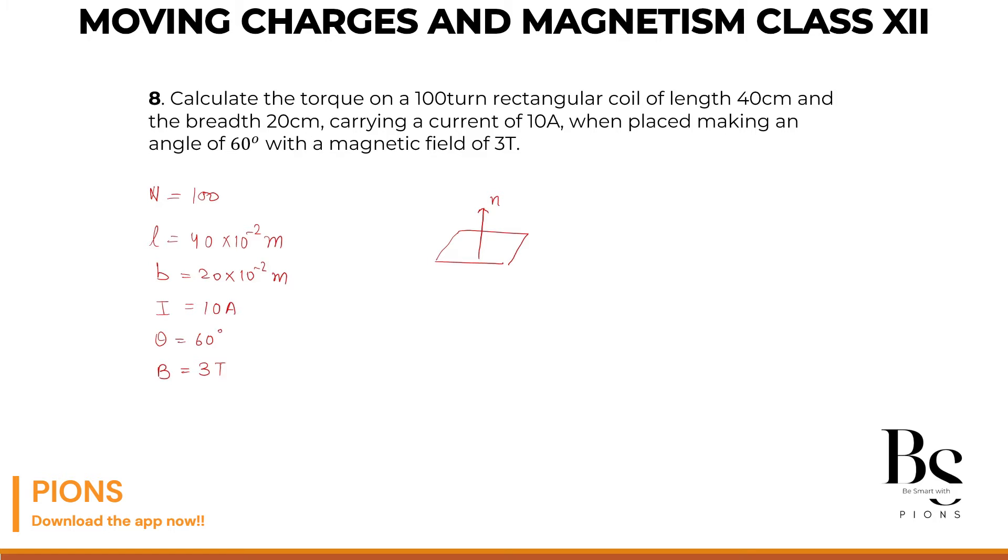Similarly, if the coil is making 60 degree, listen very careful, if it is making 60 degree with the magnetic field, then what is the angle made by the magnetic field with the normal? 90 minus 60, which is 30 degree. So theta to consider here will be 90 minus 60. Be very careful with this value, that will be 30 degree.